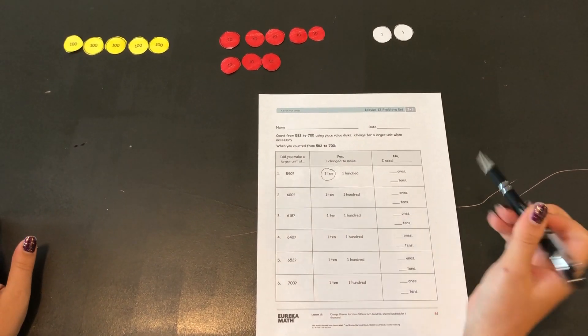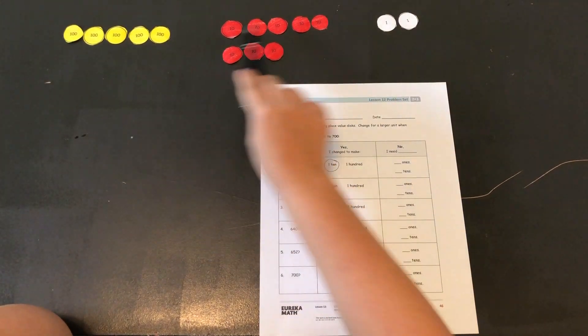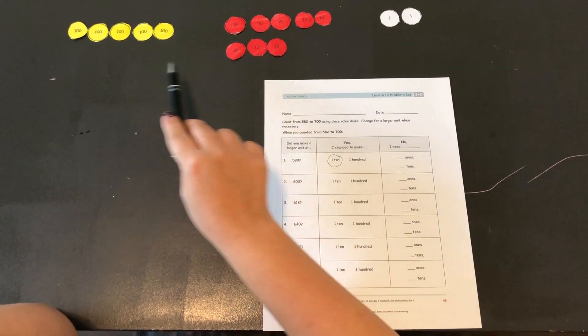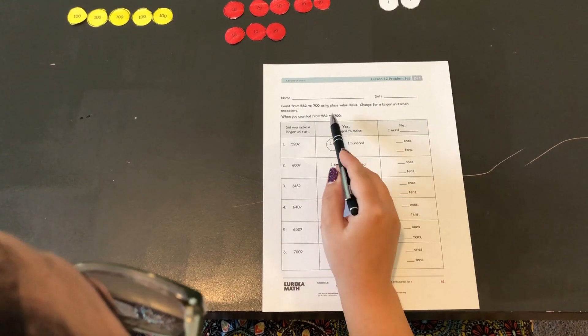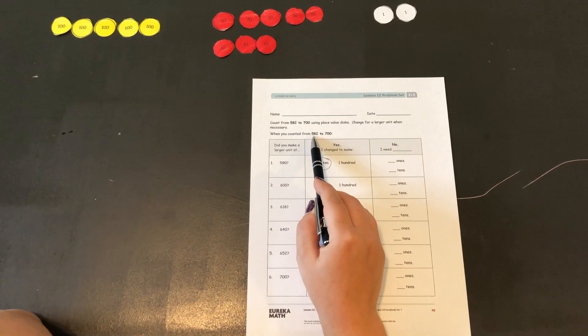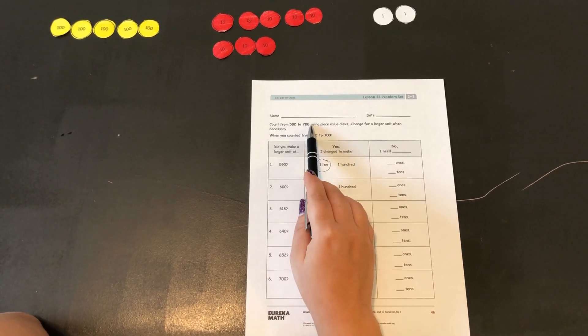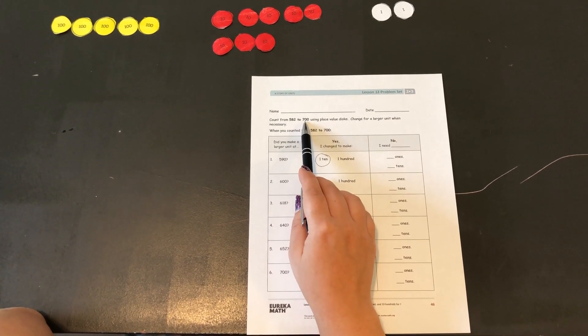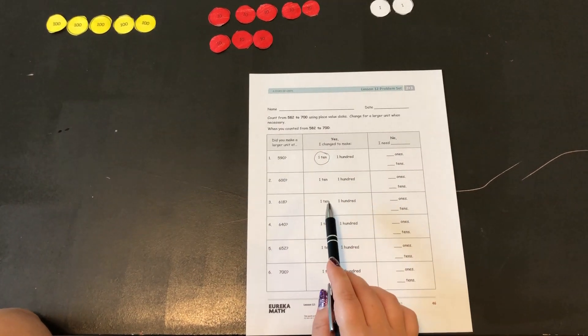It's using the place value disks that we used today in class and you've got a set to bring home as well so you could use them for this. For this problem it says to start at 582 and you're going to count up to 700. While you're doing that you're going to be filling out this chart.